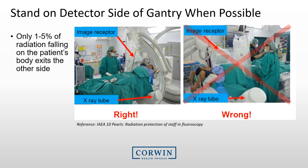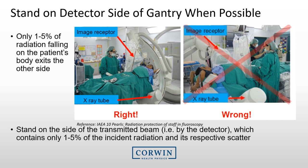Where you stand during fluoroscopy makes a difference. Stand on the detector side of the gantry whenever possible. With the x-ray tube below the patient and the image receptor above, you might think the detector side is a poor location, but most of the backscatter from the patient actually travels back in the reverse direction — making the detector side the best area to stand. Standing on the same side as the x-ray tube results in higher radiation exposure and is not recommended unless necessary for patient care.